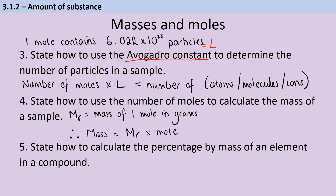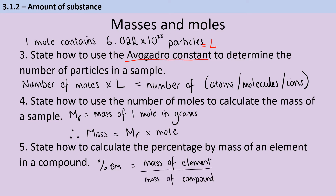To work out the percentage by mass of an element in a compound, I need to know the mass of the compound and the mass of that element. So I take the mass of the element within that compound — not just the relative atomic mass from the periodic table, but actually doubling up if there are two atoms per molecule, for instance — and divide that by the mass of the compound and multiply by 100% to turn it into a percentage rather than a decimal.